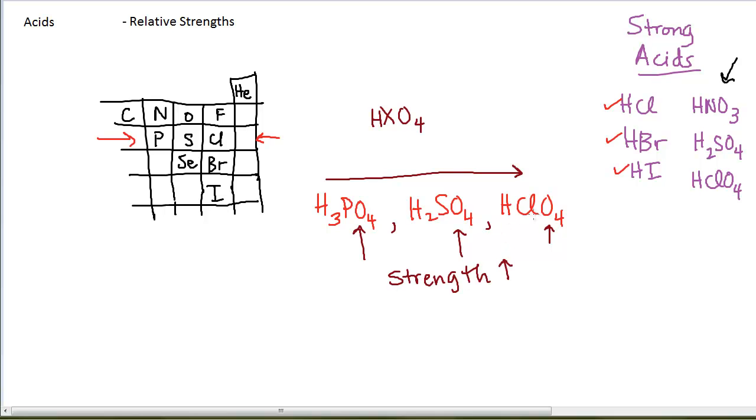The reason why the strength of this acid increases is because as I move to the right the electronegativity of this central atom increases. Electronegativity is defined as the pull of the electrons in a shared bond. They're going to pull the electrons away from the oxygens, which pull more electrons away from the hydrogen which is attached to the oxygen, and the hydrogen is more likely to be donated. Bronsted-Lowry acids are species that donate the proton, and that's the reason why we see that trend.